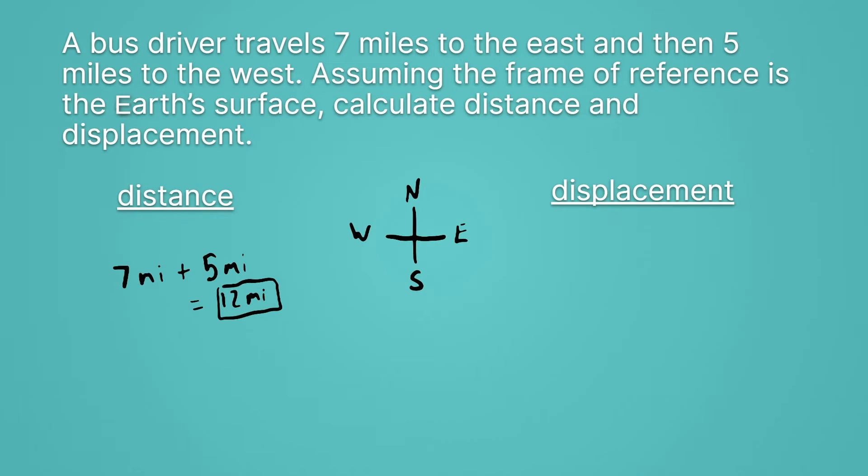So when we think about the displacement, we have to actually think about direction. And remember that the first leg of the trip is going seven miles to the east. So that's seven whole miles to the east.